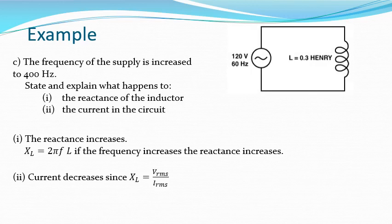The frequency of the supply is increased to 400 hertz. We're asked to state and explain what happens to the reactance of the inductor and the current in the circuit. If the frequency increases then the inductive reactance will increase, because X_L = 2πfL. And if the reactance of the inductor is increasing then the current will decrease, because X_L = V/I.